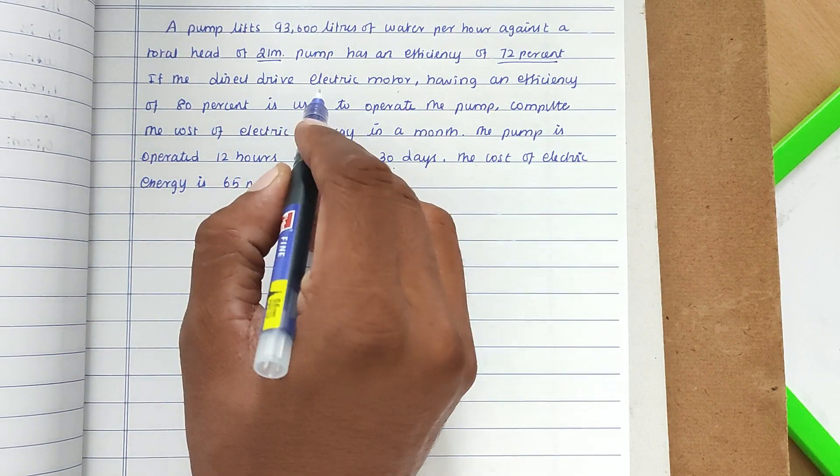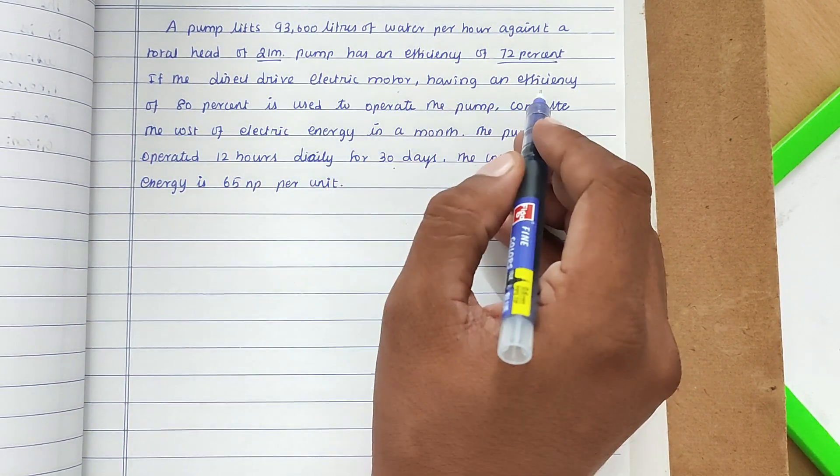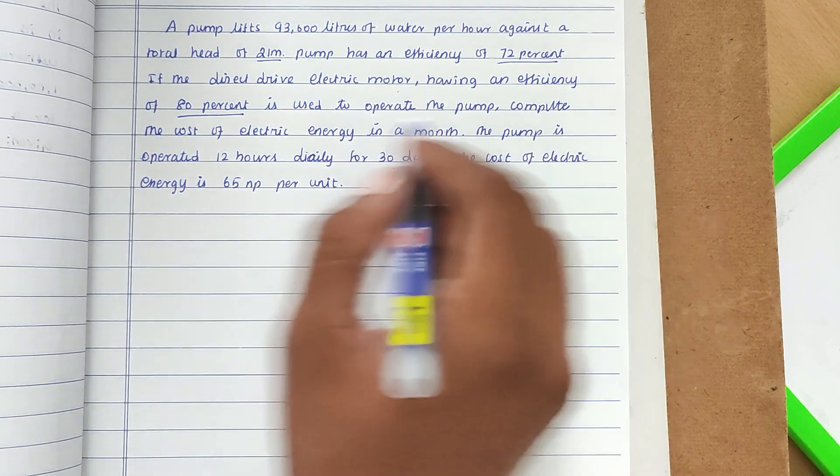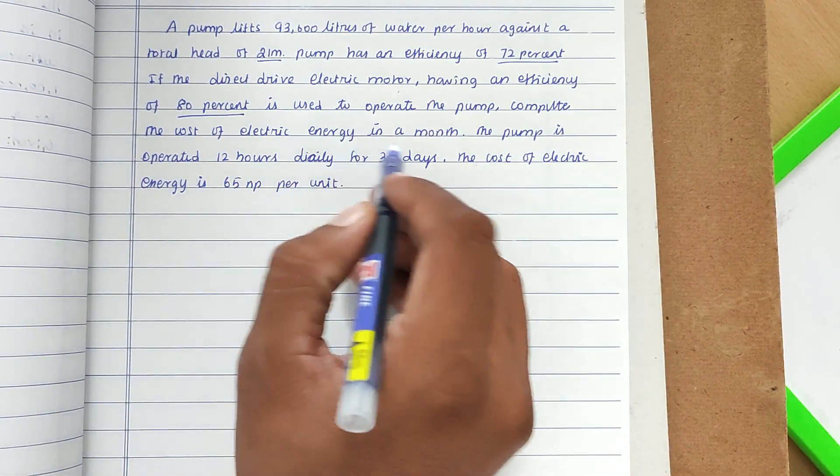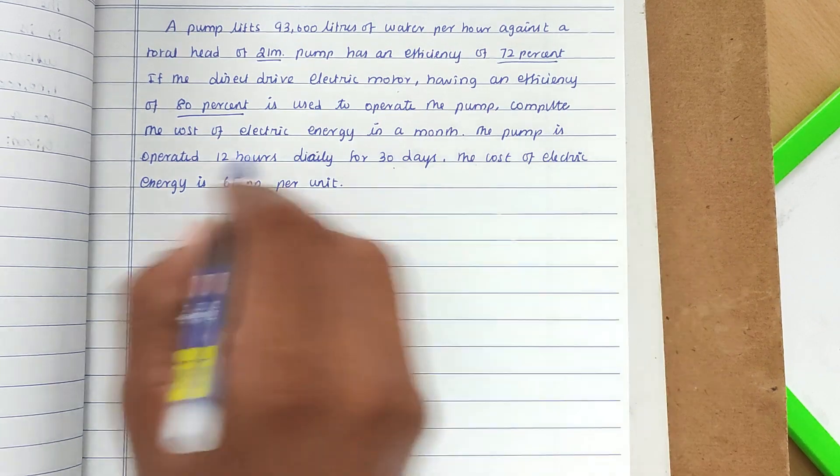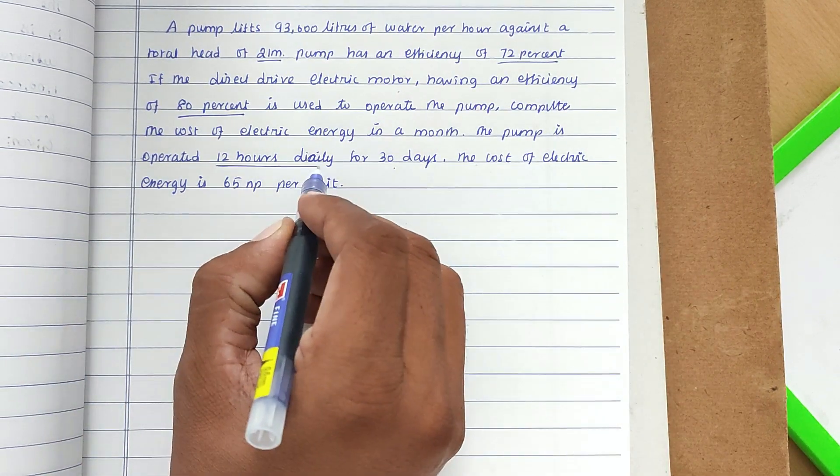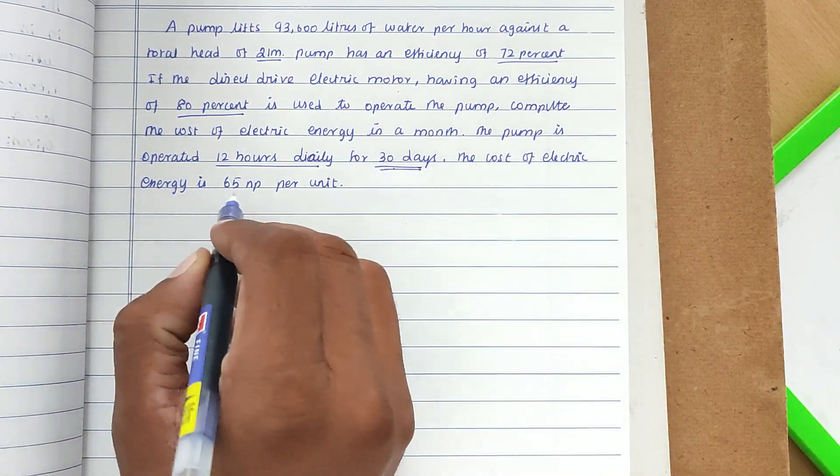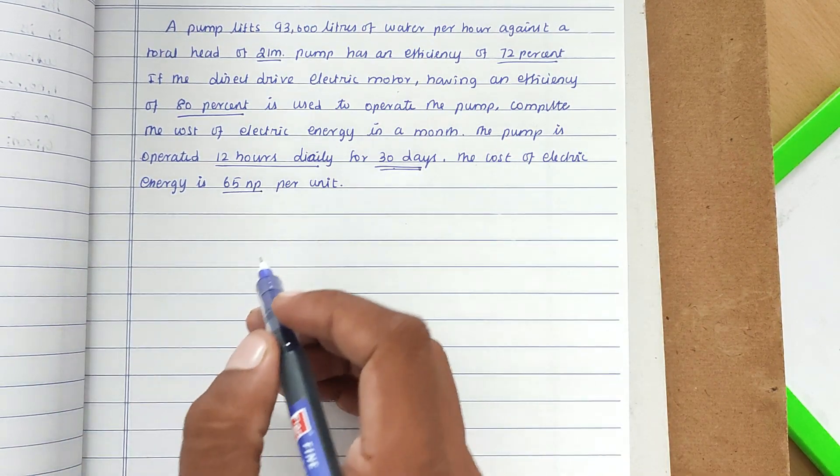If a direct drive electric motor having an efficiency of 80 percent is used to operate the pump, compute the cost of electric energy in a month. The pump is operated 12 hours daily for 30 days. The cost of electric energy is 65 paisa per unit.